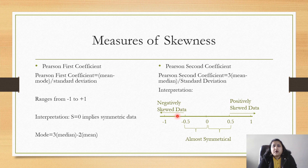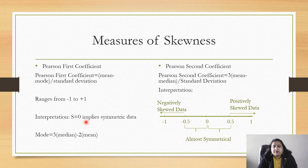Now the next question is: how can we measure skewness? We can measure it using Pearson's first coefficient or Pearson's second coefficient. The formula for Pearson's first coefficient is: (mean minus mode) divided by standard deviation, and it lies between minus one to plus one. If this coefficient is zero, the data is symmetric. If it is greater than zero, the data is positively skewed. If it is less than zero, the data is negatively skewed.